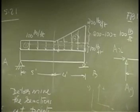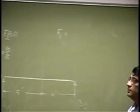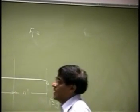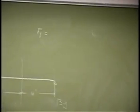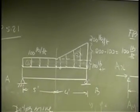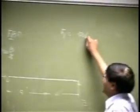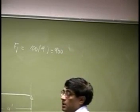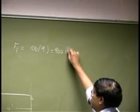The actual force is the equivalent loading as a result of this rectangle. The area of the rectangle is 100, acting on a length of 9 feet, so the actual force is going to become 900 pounds.